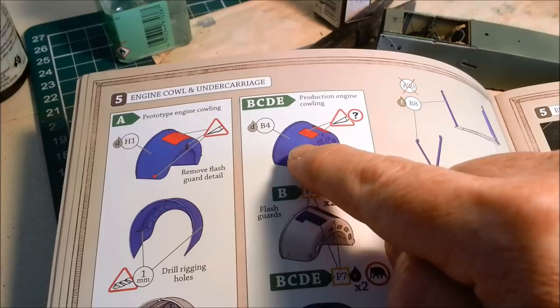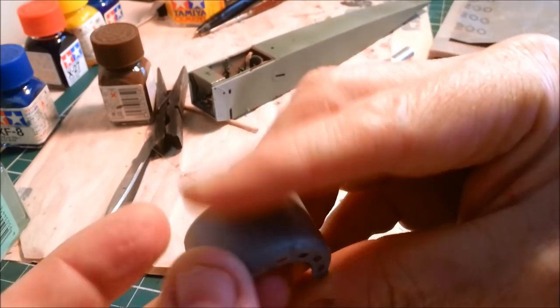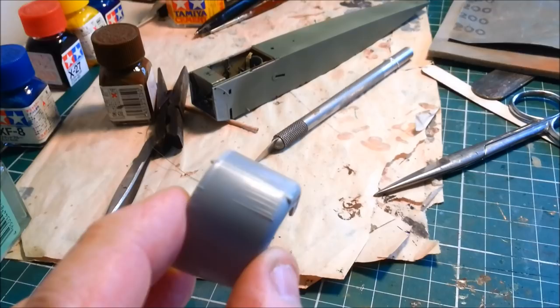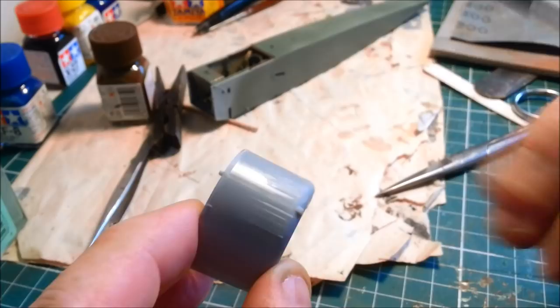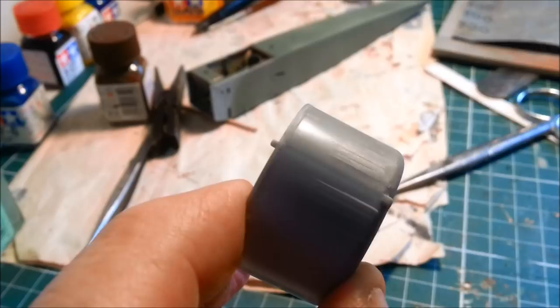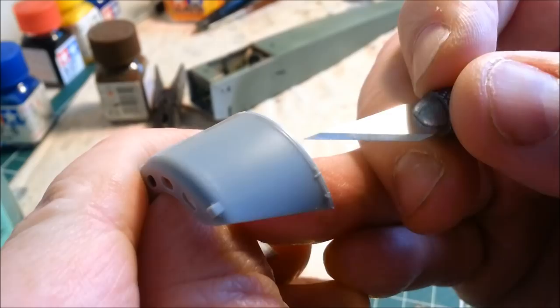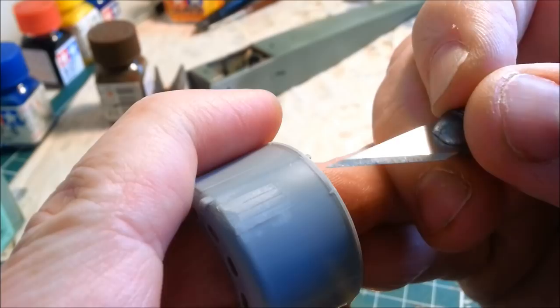Sounds pretty straightforward. But unfortunately, to remove these molded-on flash guards, I've started sanding away and I've bloody well gone and destroyed all the detail up the back of the engine cowling here. You can see all along here it's got this really nice little tiny ridge detail that goes along the bottom. And then here, I've sanded it flat. Bugger.